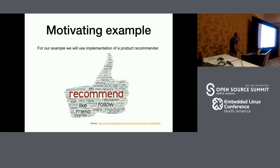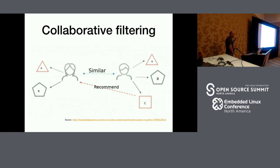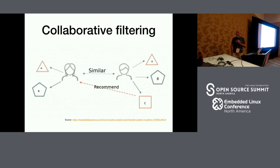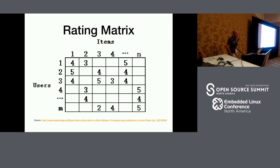As Jonathan was saying, the motivation example is a recommender — a typical example that many people in machine learning use. It's based on collaborative filtering, which means that if Jonathan and I are buying similar products we have similar interests, so if I buy a new product it will be recommended to Jonathan. This is based on a rating matrix where for every user and every item you calculate the preference.